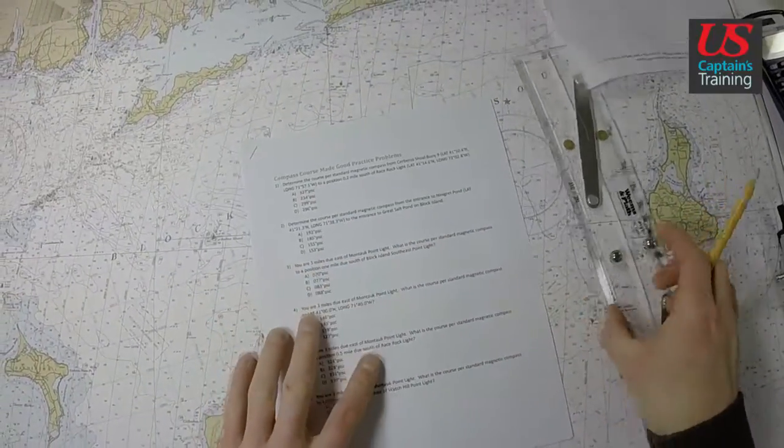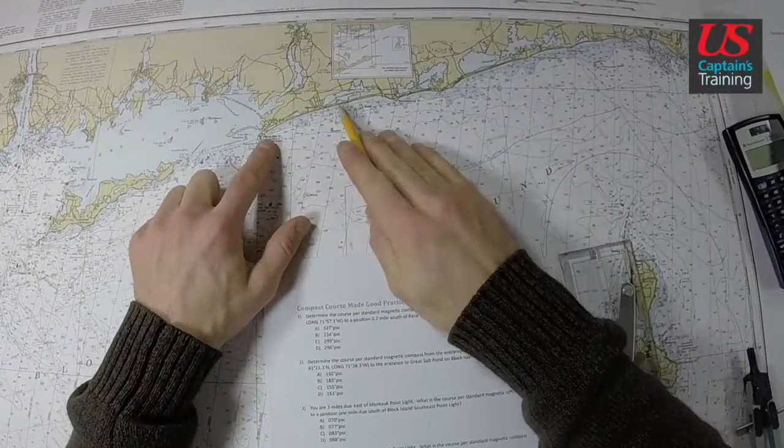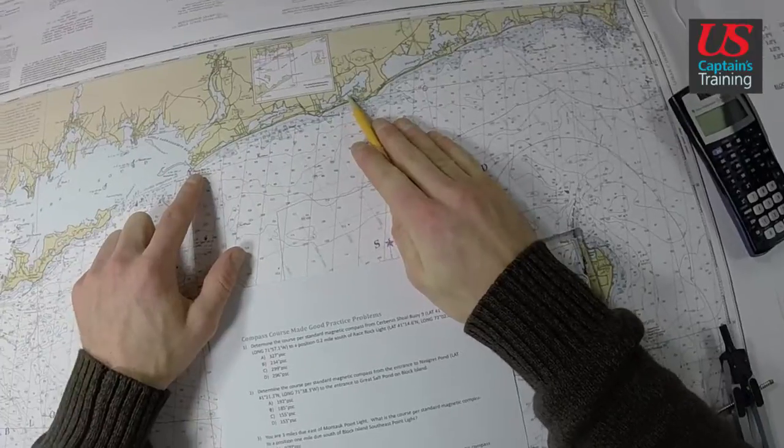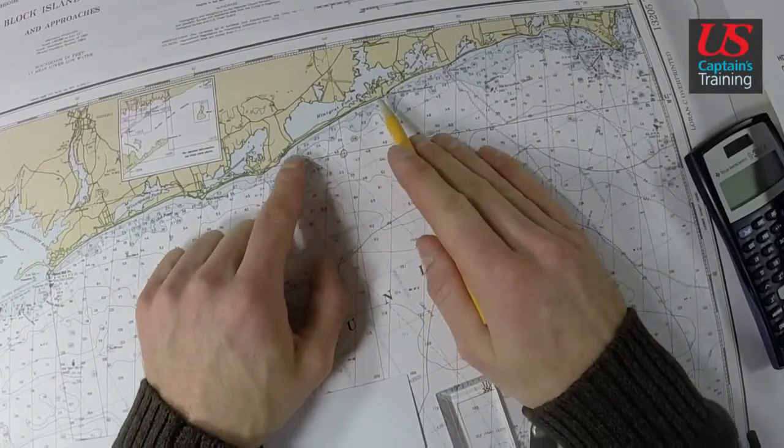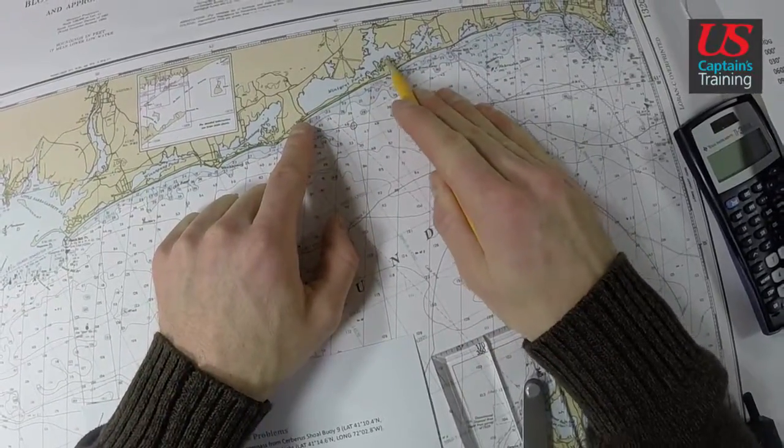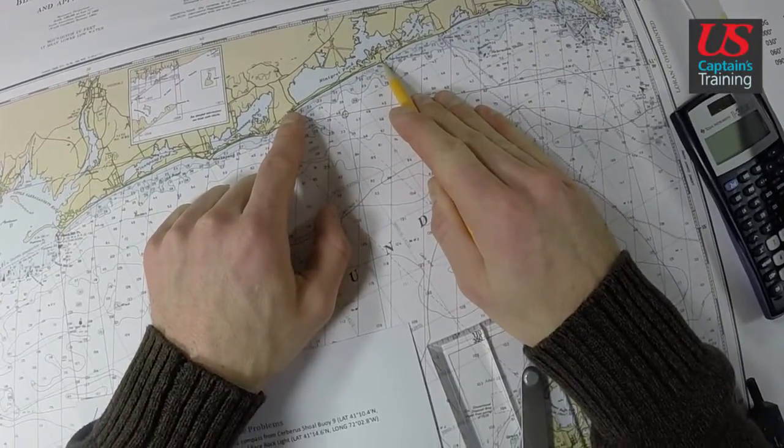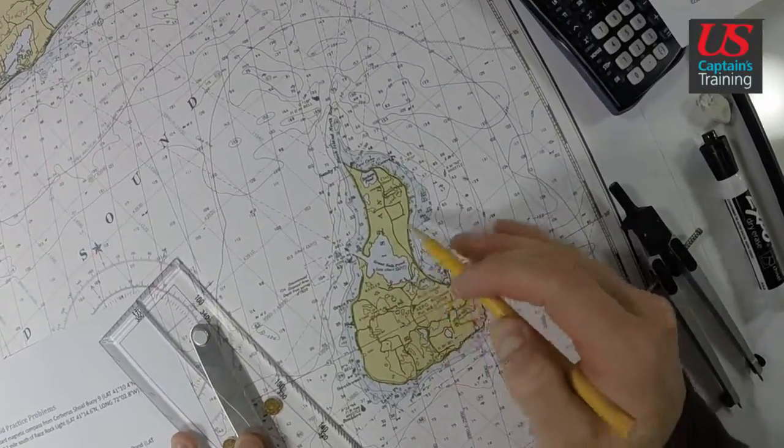We need to find Ninigret Pond. It's right up here with the ponds - Winnapaug, Quonochontaug Pond, and Ninigret Pond. Here's the entrance to the pond, right here. So we're going from the entrance to Ninigret to the entrance to Great Salt Pond here on Block Island.